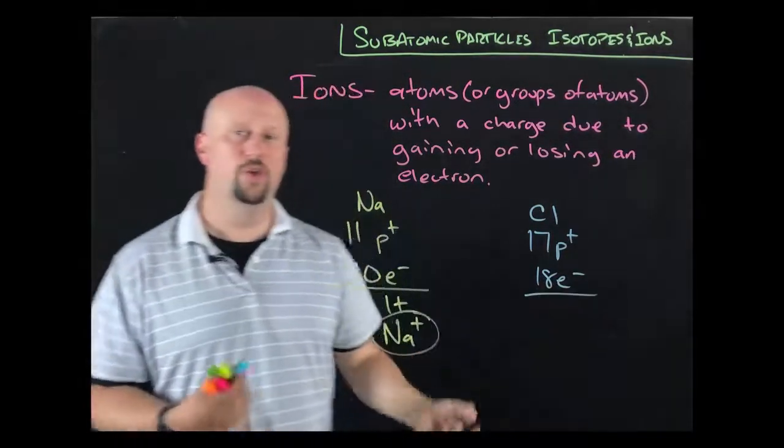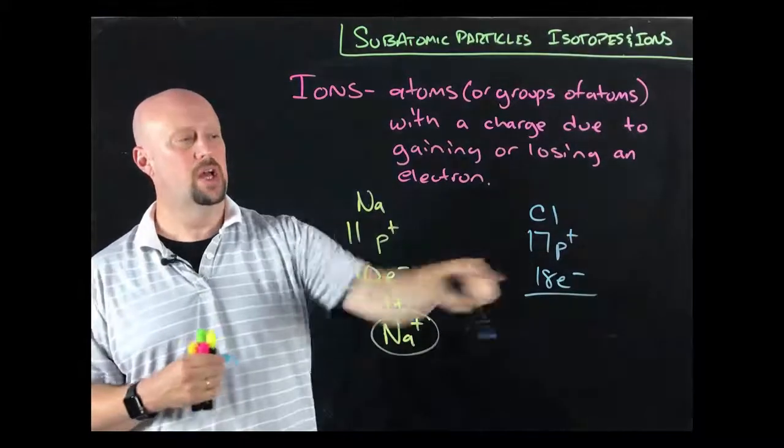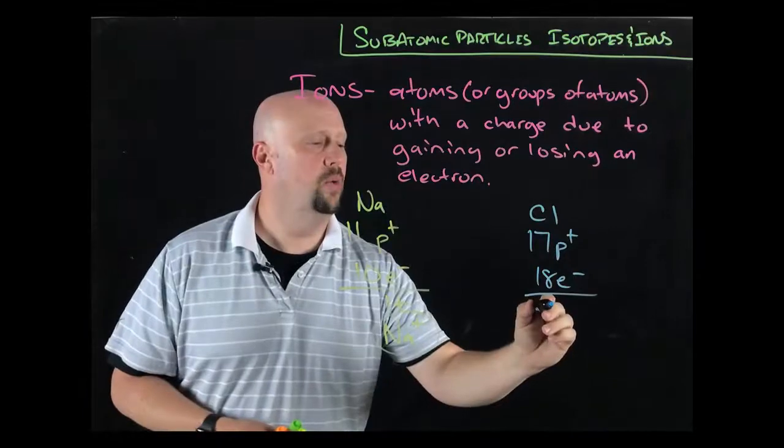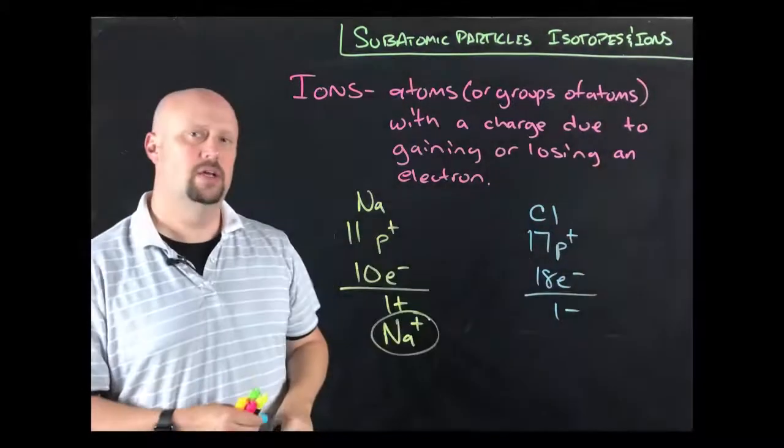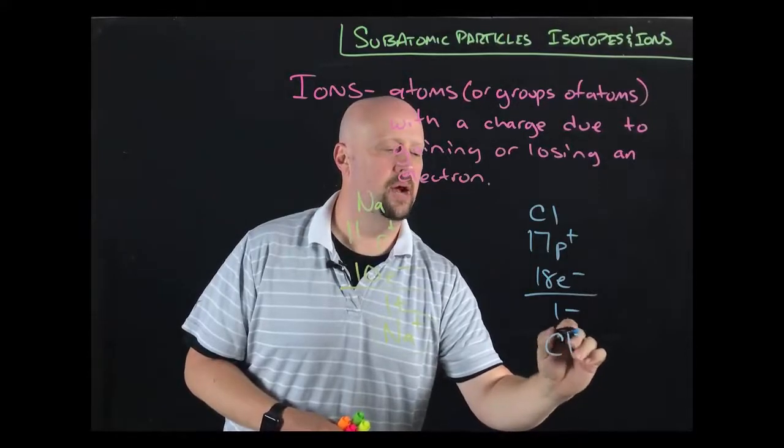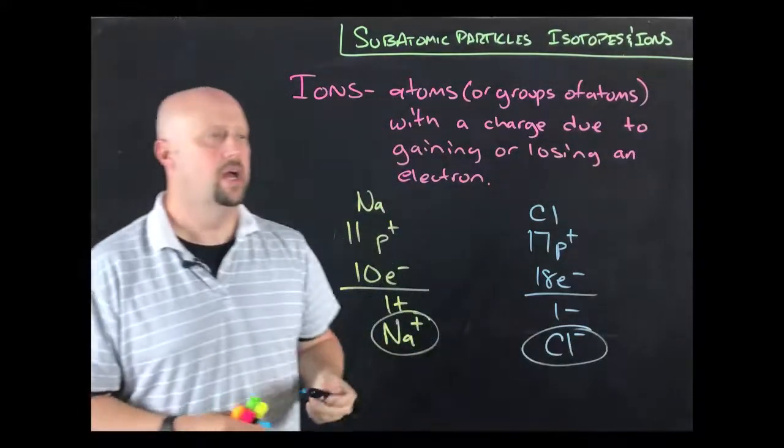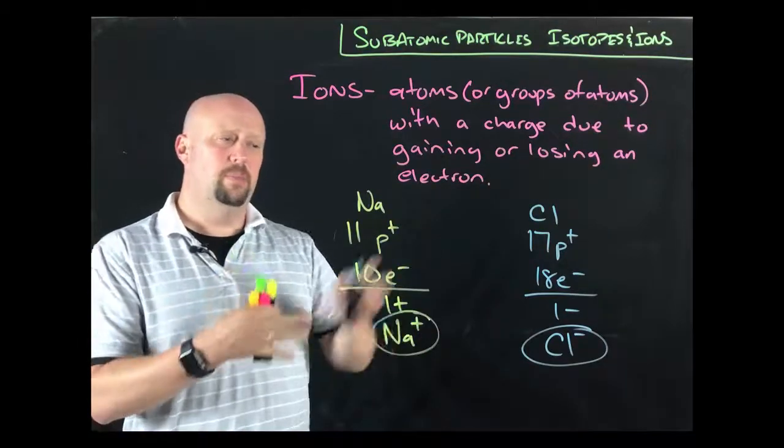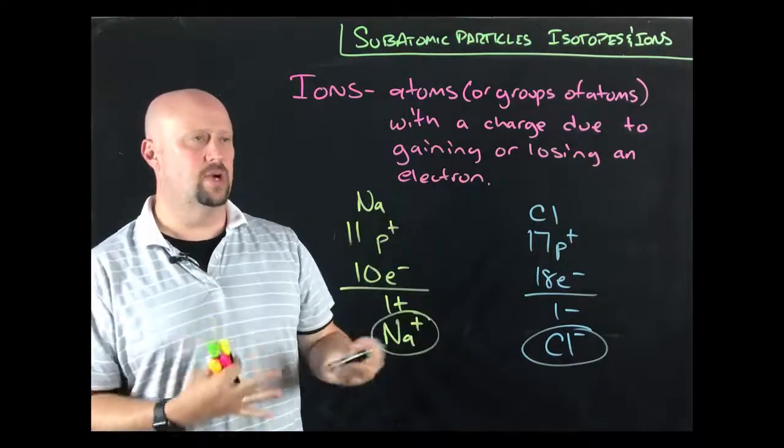If we gain an electron over the 17, if we have one additional, then again, that doesn't balance out and become neutral. Instead, we get a negative one charge out of that. And so that chlorine atom now becomes a chloride ion.